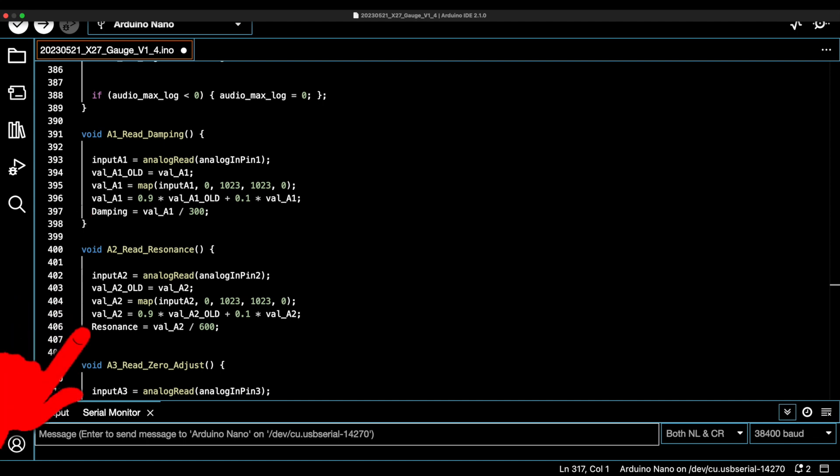We then use the same procedure for the resonance frequency. In this way, we get a universal control for our display, where we can set the damping and the resonance frequency of the pointer via potentiometers.